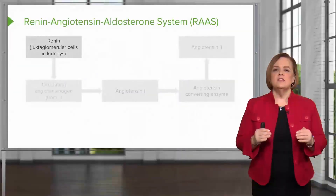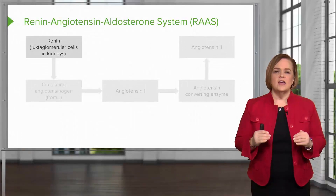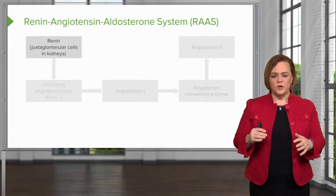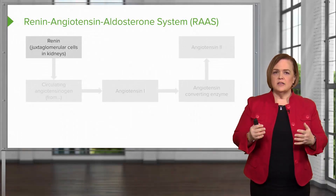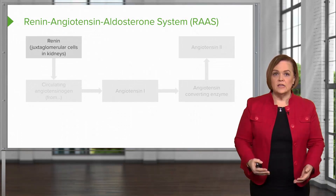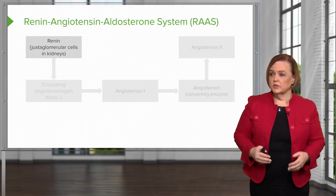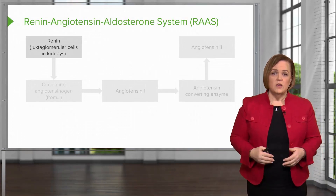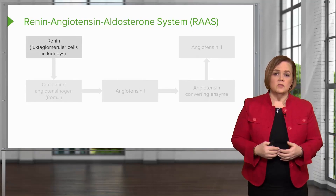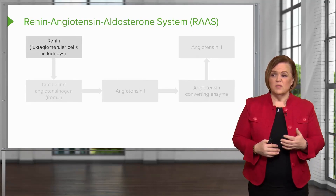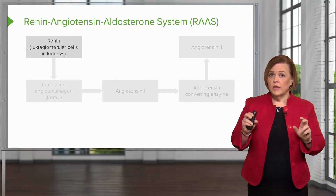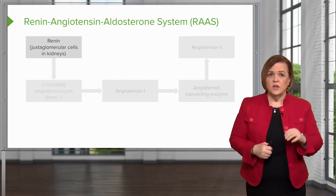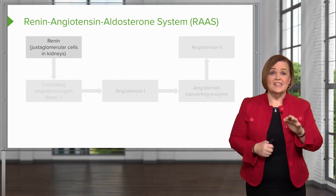Now let's break the RAAS down very simply. For some reason your body senses it needs to raise the blood pressure — maybe it senses a drop in blood pressure, maybe it senses a low sodium. Whenever that alarm bell goes off, the juxtaglomerular cells in the kidneys respond.